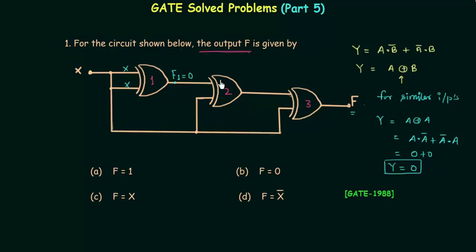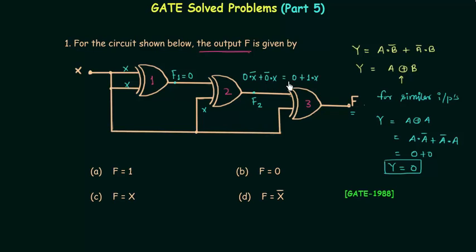Now we find the output of the second XOR gate, which we call f2. The first input is zero (the output of the first gate) and the second input is x. Expanding: (0 AND x-complement) OR (0-complement AND x). Zero AND x-complement is zero; 0-complement is 1, giving us 1 AND x. So the output f2 is equal to x.